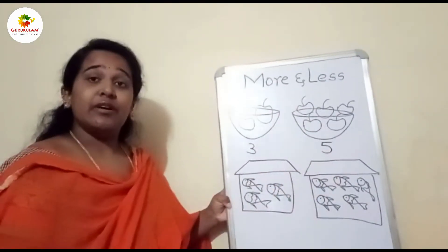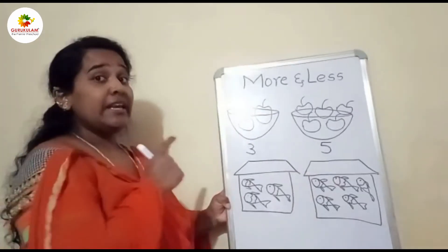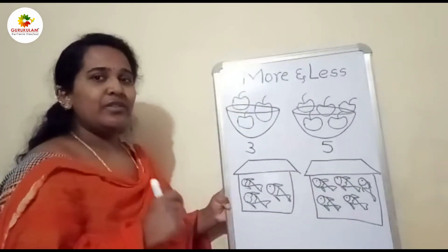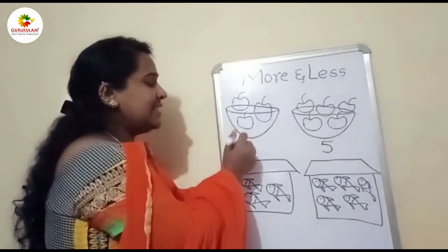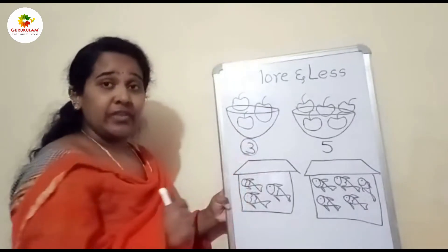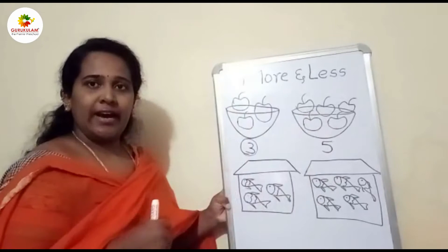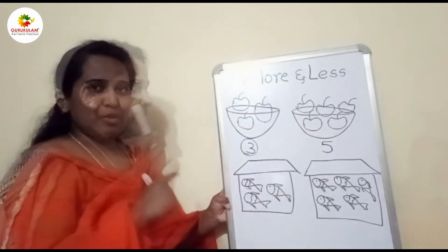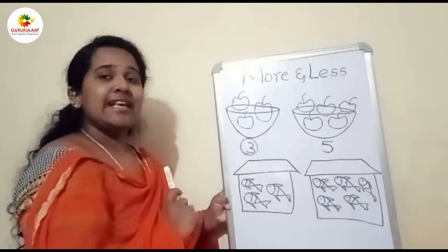So now tell me, in which bowl we have less apples? Yes, here. So in the first bowl we have three apples, another bowl we have five apples. So here, five is more, three is less.